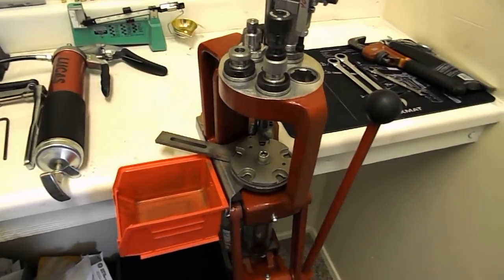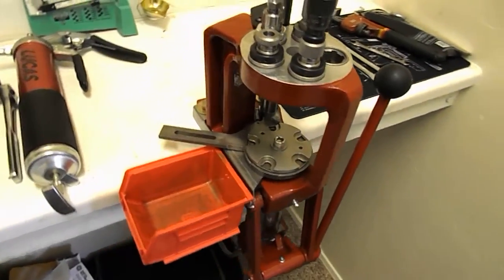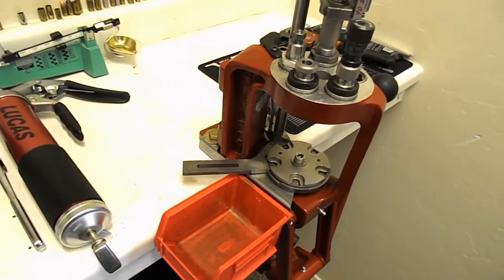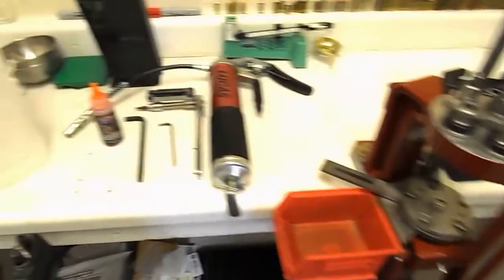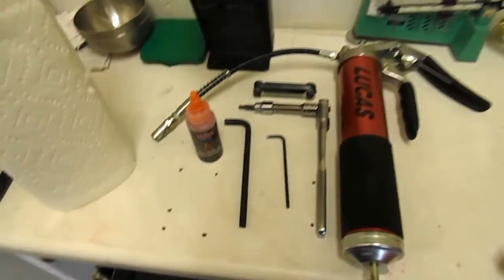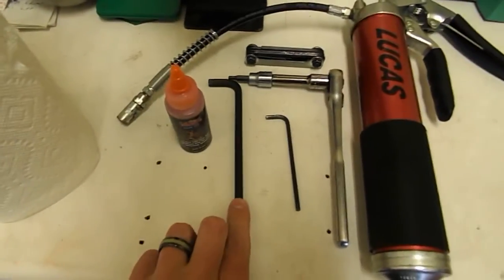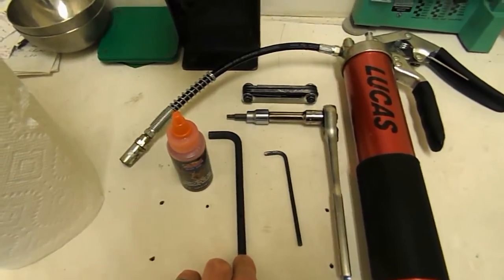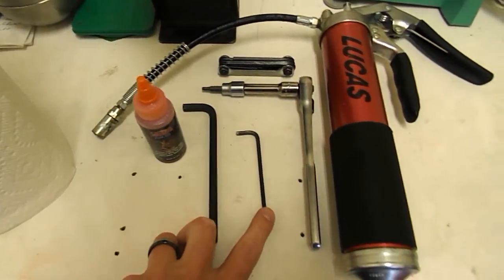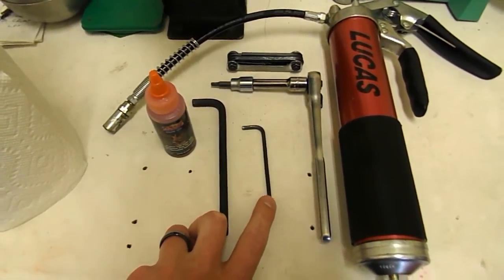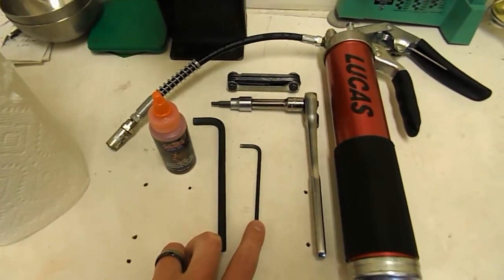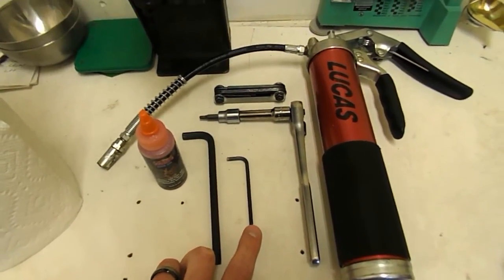We're going to tear it apart, clean it up, put it back together, show you some tips and tricks on adjustments along the way. Here's some of the tools we're going to need. We've got a 5/16ths Allen wrench right here to take off the shell plate. We've got a 5/32nds here to take care of the rest of the screws. Hornady did a very good job—they only incorporated two Allen wrench sizes in the whole machine.